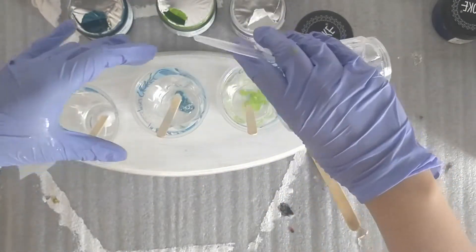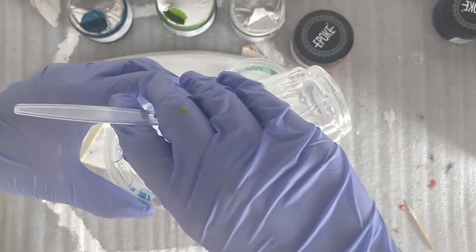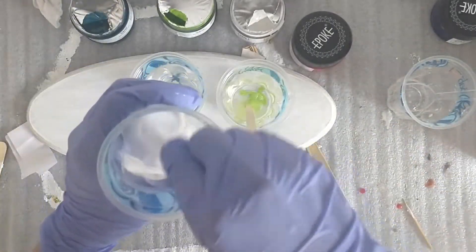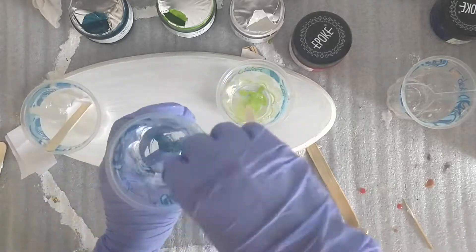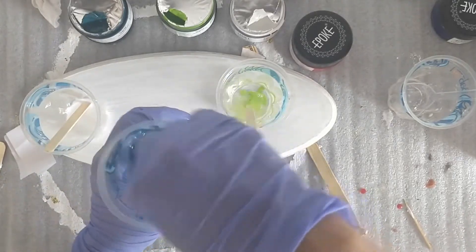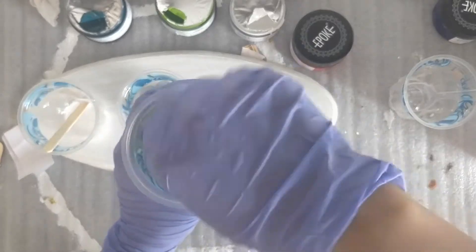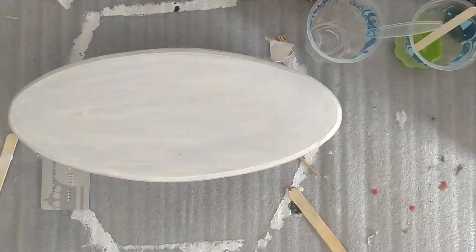I have premixed the resin mixture in 3 to 1 ratio on my weighing scale. Remember that the proportion needs to be exact to get fully cured projects. I have also put the pigments in the plastic cups. The pigment and resin ratio needs to be just 10% which you need to eyeball.